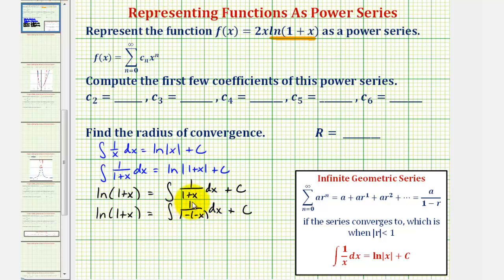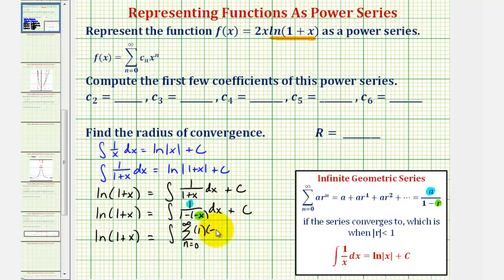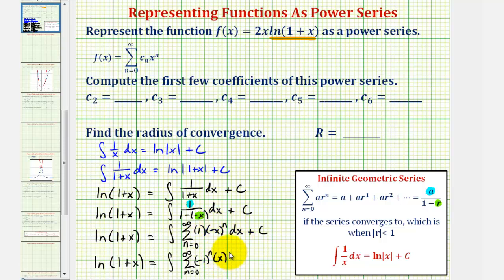Now we can write this integrand as a power series, where a equals 1 and the common ratio r equals −x. This gives us: natural log of (1+x) equals the integral of the summation from n=0 to infinity of (−1)^n times x^n. We can write this as the integral of the summation from n=0 to infinity of (−1)^n · x^n. Since our function f(x) = 2x · ln(1+x), we can represent it by multiplying that power series by 2x.